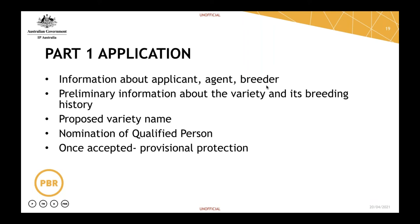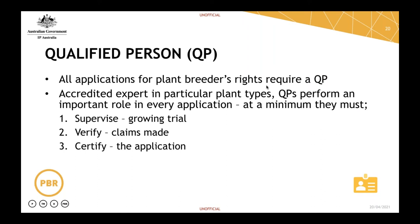A very important step if you're new to PBR is the qualified person, or QP. All applications for plant breeders rights require a QP. QPs are accredited experts in particular plant types and they perform a very important role in each application. At a minimum under the legislation, they're required to supervise the growing trial, verify the claims made by the breeder and the applicant, and certify the application. QPs may well undertake other tasks as well, which would vary from QP to QP and application to application.